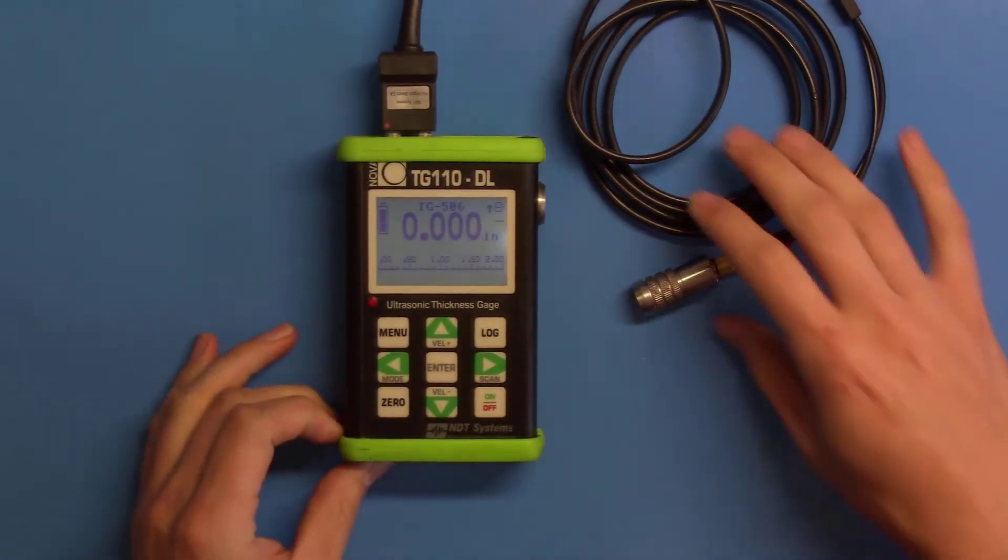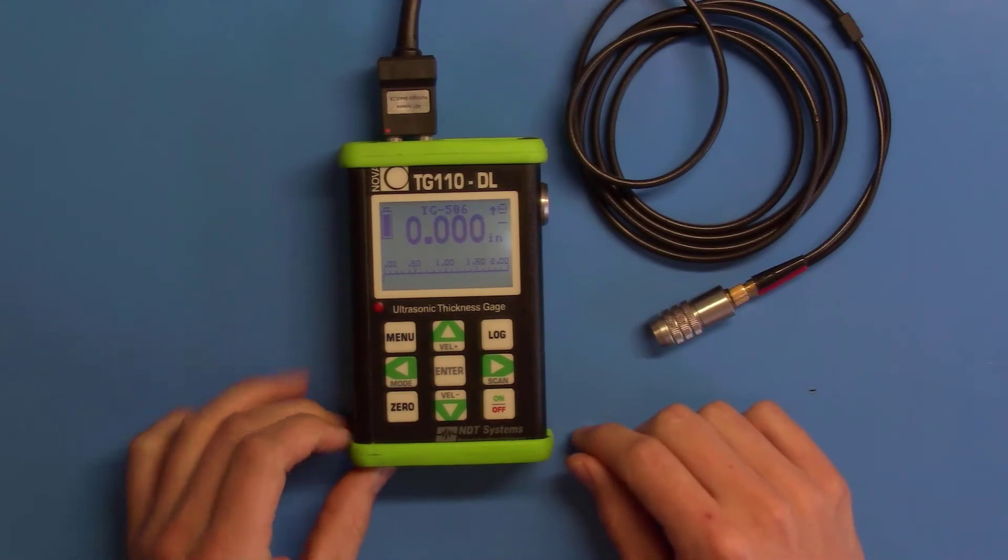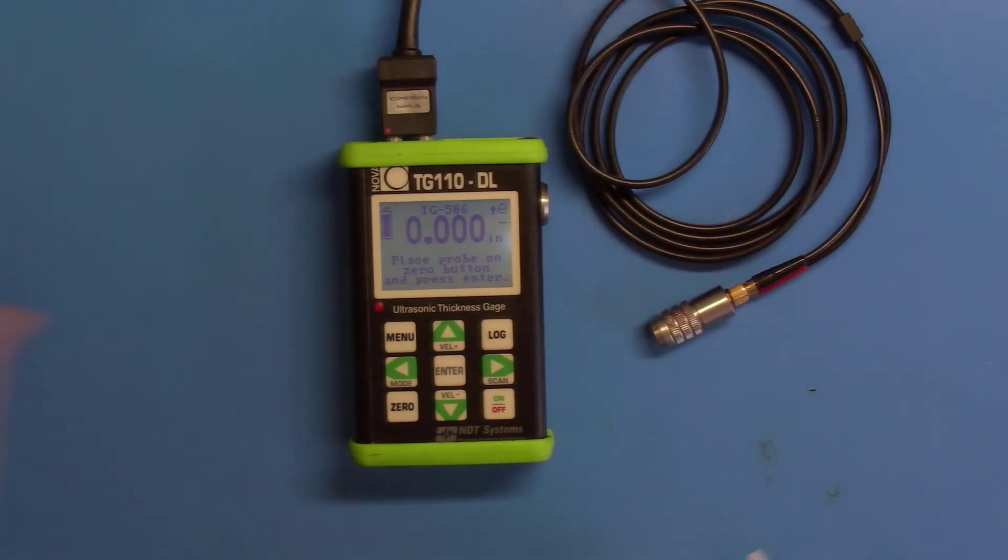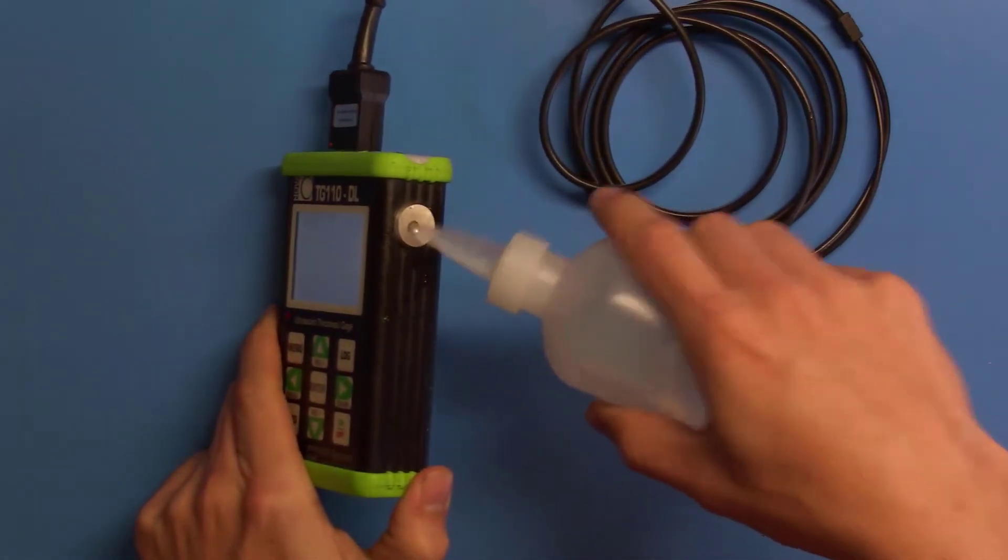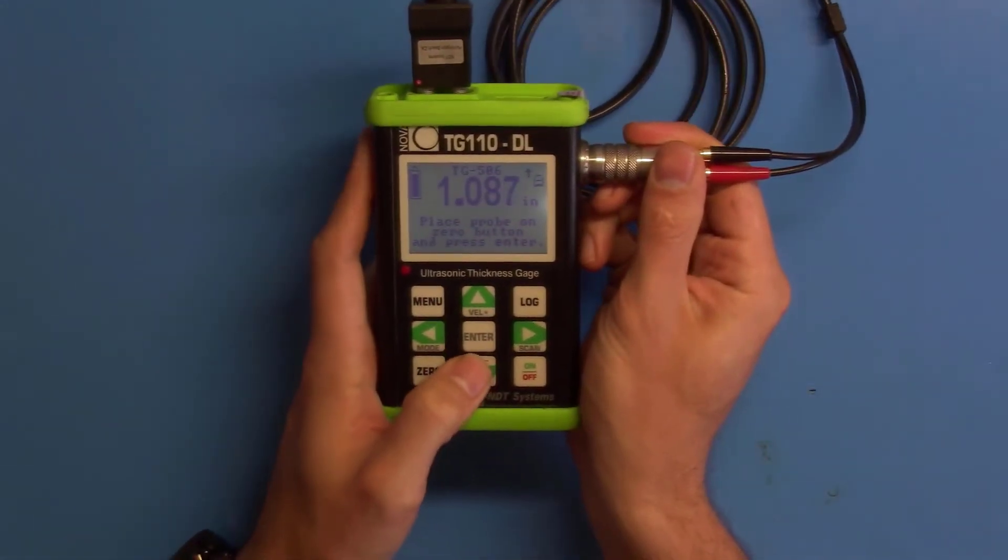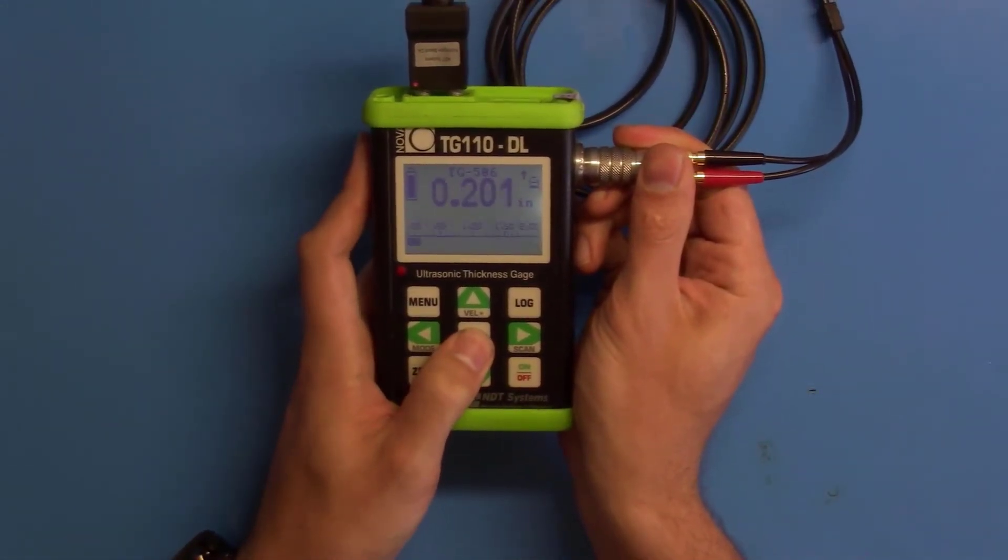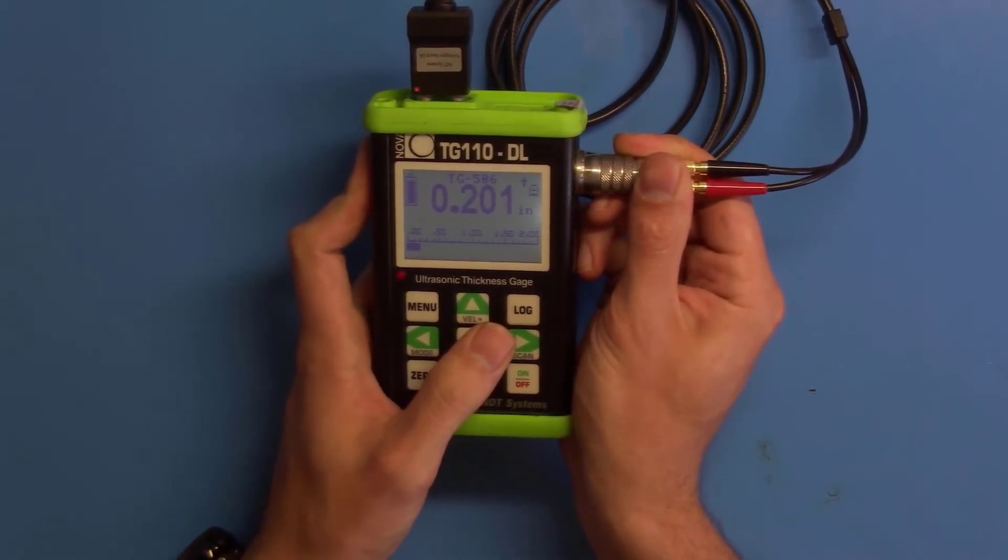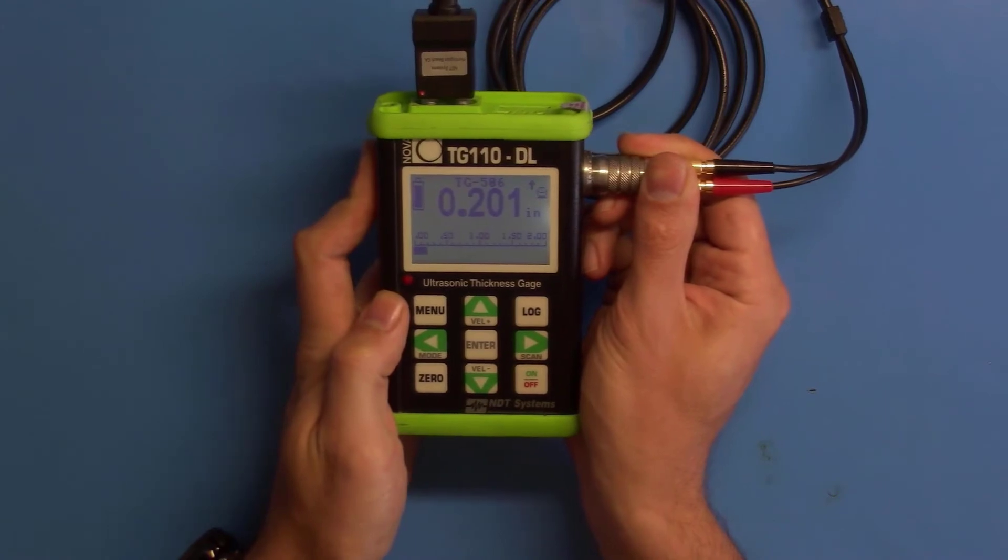Before we can calibrate to a material, we'll need to zero the probe. Hit zero key. Now couple the probe using some couplant to the zero block on the side. Once it's flat and centered, push enter. You'll see a value displayed. It's about 0.201 for the standard steel velocity setting.